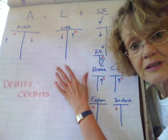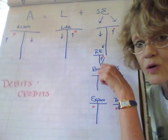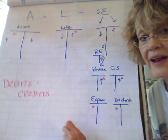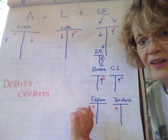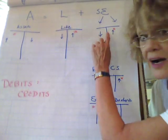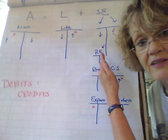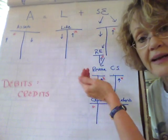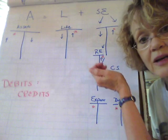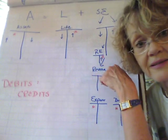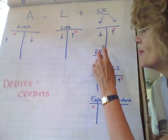So that's how liabilities work. Now stockholders equity is more complicated and we talked about how complicated it was in the last video I did. So stockholders equity is on the right side of the equation, so normally accounts, we want the accounts to increase it with credits. That's true about common stock.